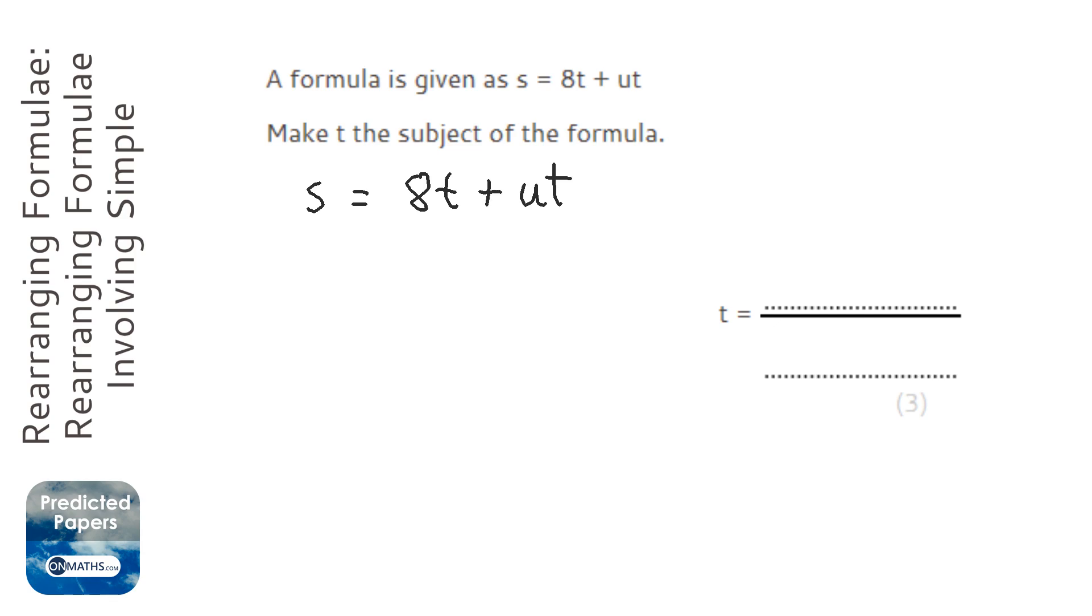look at that and go, hang on, it's impossible to make t equals because there's two terms with t in it, so we would end up with two lots of t. But there is something that you've learned before that...